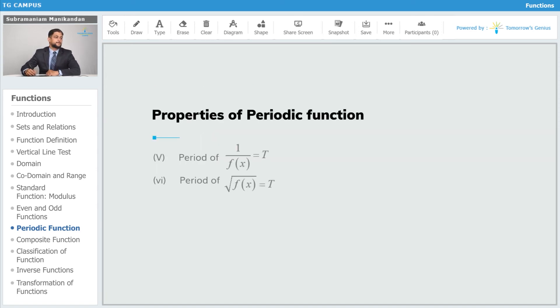Next property: period of 1 upon f(x) will also be equal to T, and period of square root of f(x) will also be equal to T. That is, say, the period of cosec x will be equal to 2π, and the period of square root of cosec x is also 2π.